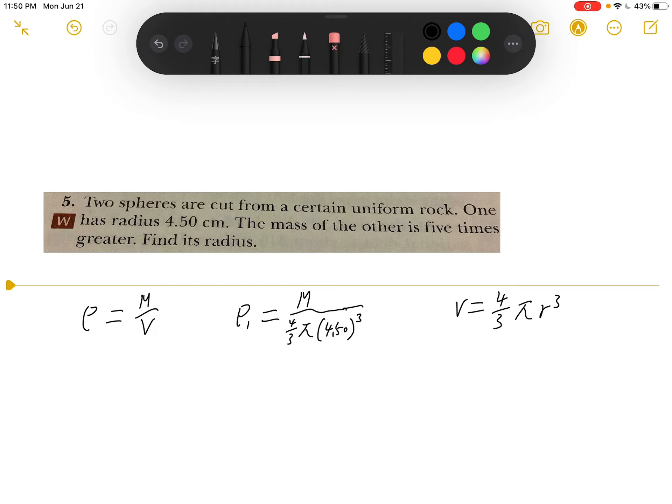Let's call this rho 1 equals M1 divided by 4/3 pi r cubed.